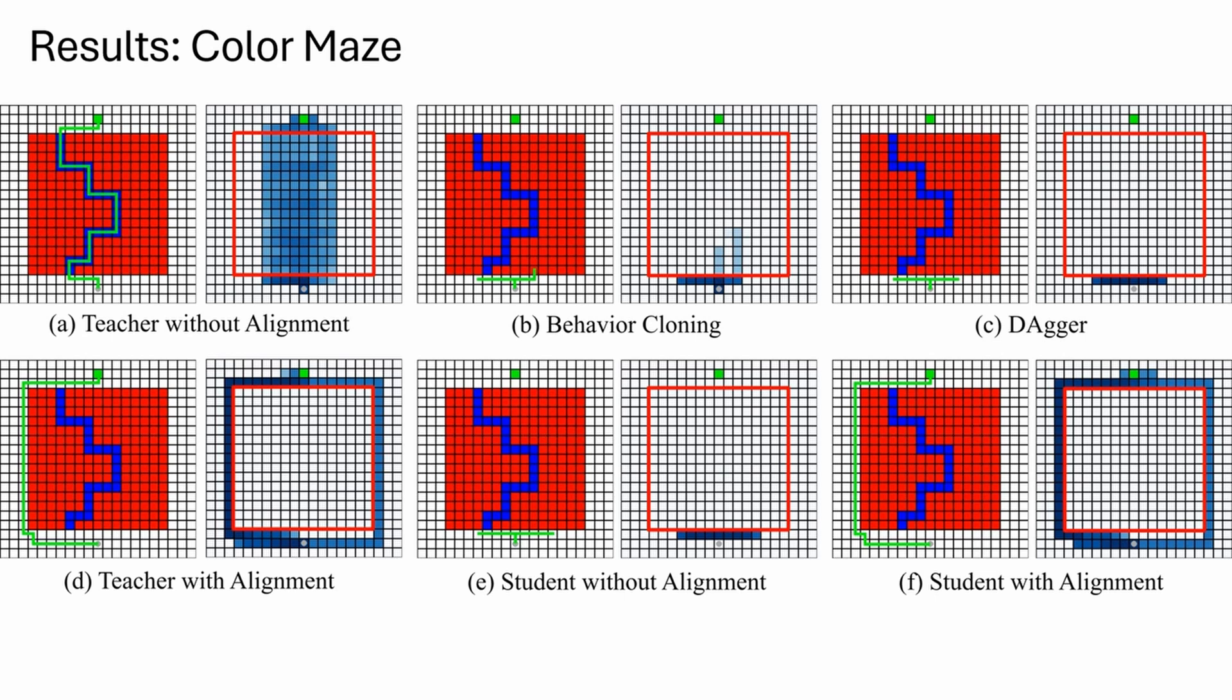By using our framework, the teacher policy receives a penalty for visiting states where the student is unable to predict the same action, which happens inside the maze. Thus, the teacher learns to avoid the maze and navigates around to reach the target. This behavior is successfully imitated by the student, who reaches the target in all test runs, unlike all other baselines.